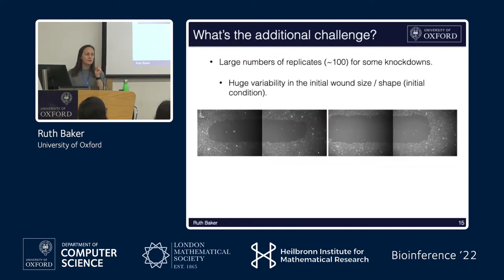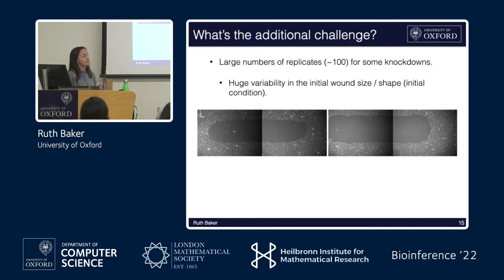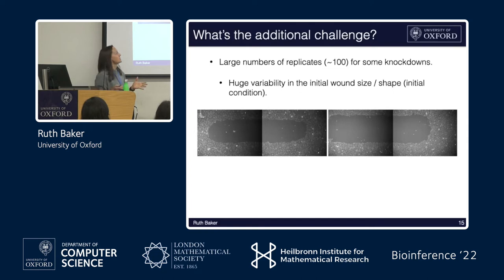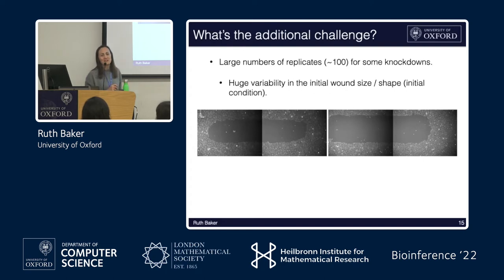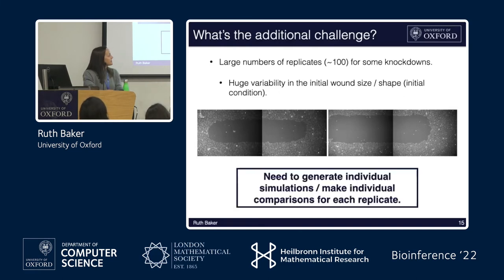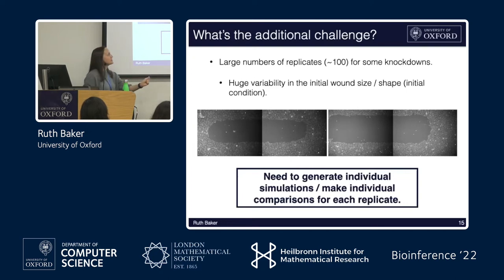The tricky part is that simulating this model many times is computationally expensive, and we have incredibly large amounts of data. For some gene knockdowns we have more than 100 replicates, and there's huge variability in the initial wound size and shape. This means you can't initialize your model with just one initial condition — for each replicate under a given condition you need to initialize the model from the data at time zero and simulate forward. So for every round of ABC, selecting a parameter set means simulating the model more than 100 times, which is simply not feasible.